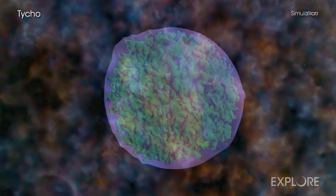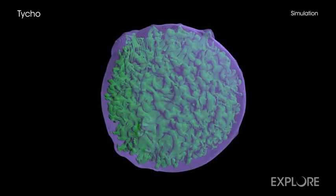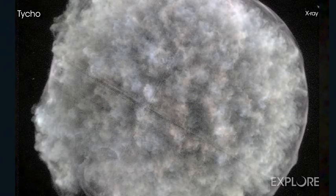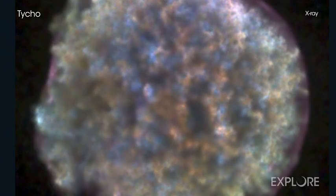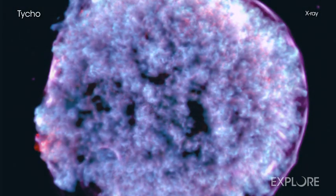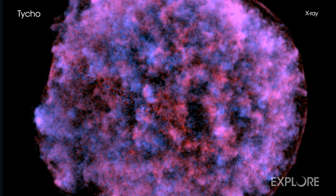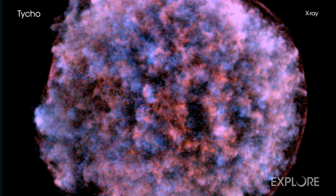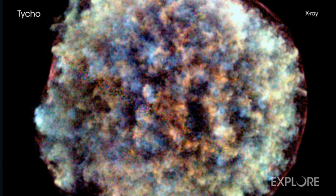This latest image of Tycho from Chandra is providing clues. To emphasize the clumps in the image and the three-dimensional nature of Tycho, two narrow ranges of X-ray energies were selected to isolate material moving away from Earth and moving toward us. The other colors in the image show a broad range of different energies and elements and a mixture of directions of motion.